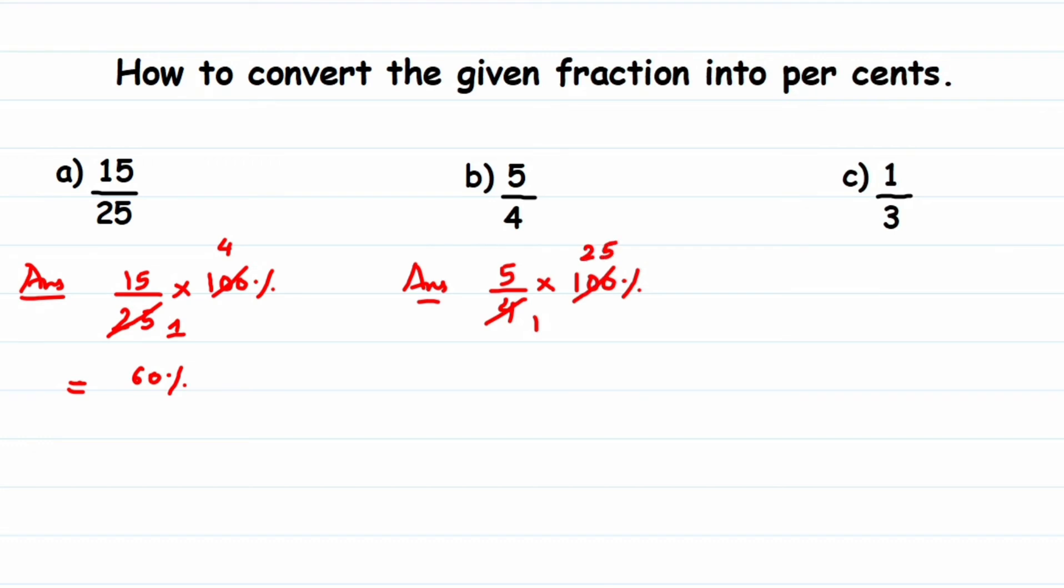So 5 into 25 is 125, so we'll get 125 percent. The last question: we have 1 upon 3.